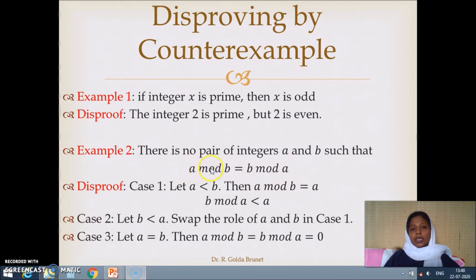But due to the symmetric property of the statement that we have here, a mod b equals b mod a, the first two cases like a less than b and b less than a will be similar because we just need to exchange the roles of a and b. So, we have only two cases here.